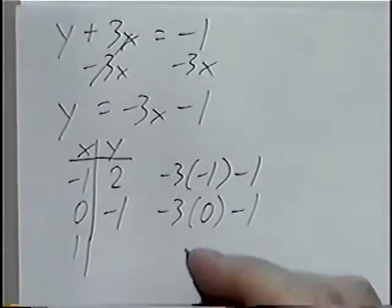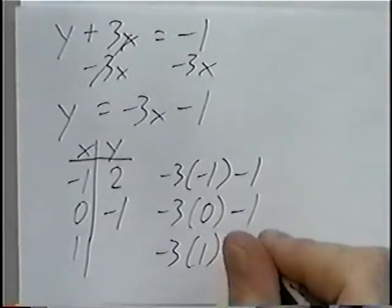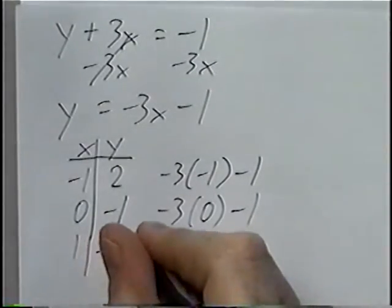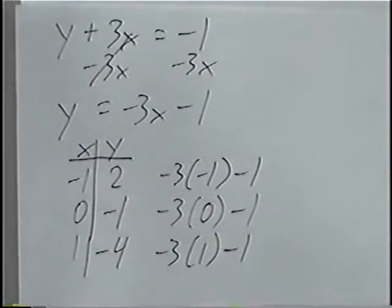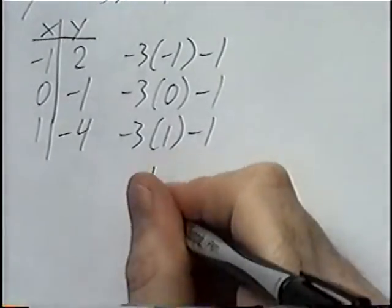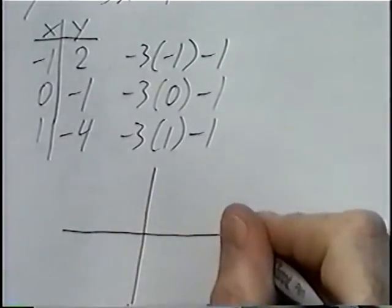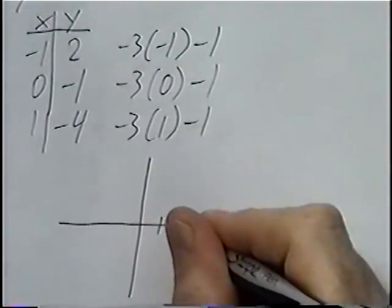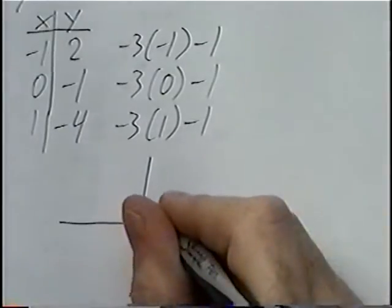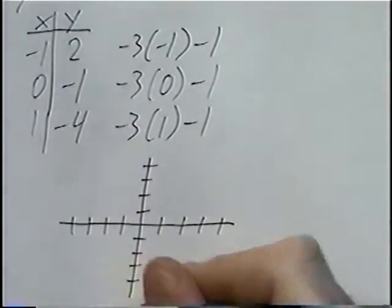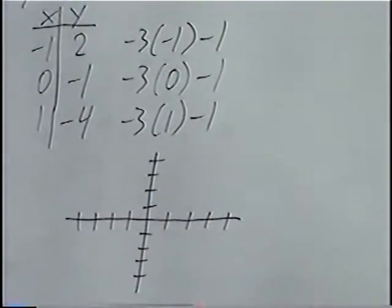The last point: plugging in positive one — negative 3 times one minus one. Negative 3 times one is negative 3, and minus one gives negative four. Graphing from here, we draw the x-y axis. Looking at the biggest number, negative four, we want to go four spots in each direction. If you want, you can label the x-y axis.